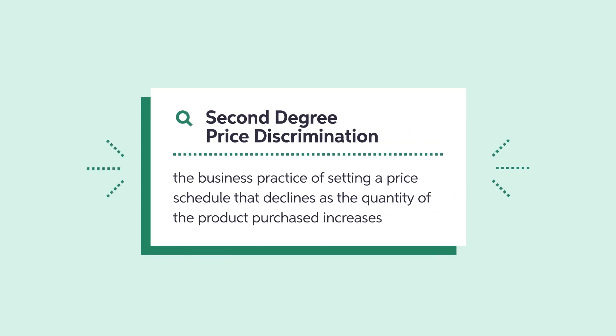Second-degree price discrimination sets a price schedule that declines as the quantity of the product purchased goes up. Take electricity pricing schedules, where the first 200 kilowatt hours of electricity are charged at 10 cents per kilowatt hour, the next 300 kilowatt hours are charged at 9 cents per kilowatt hour, and so on.